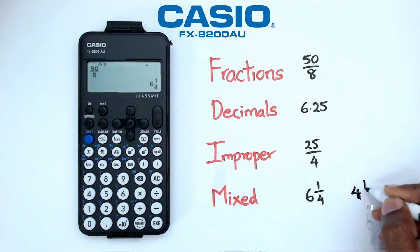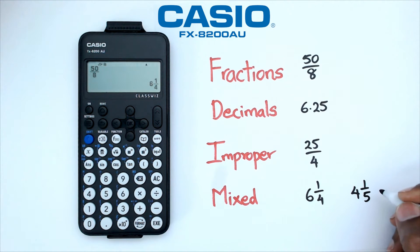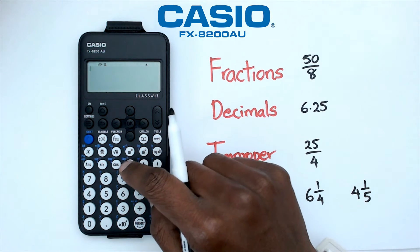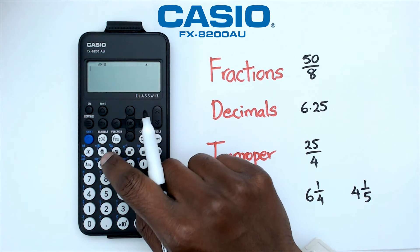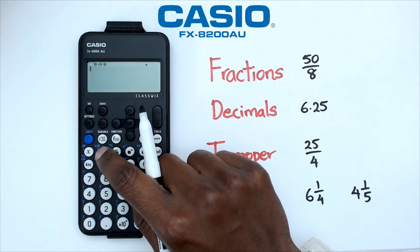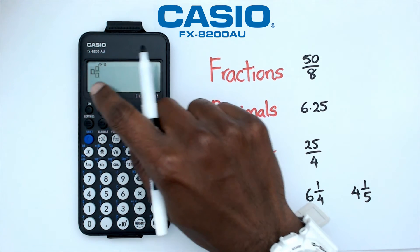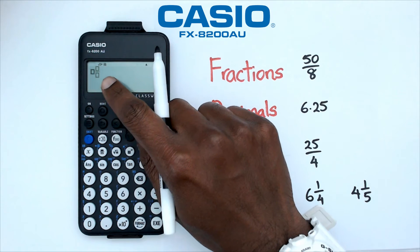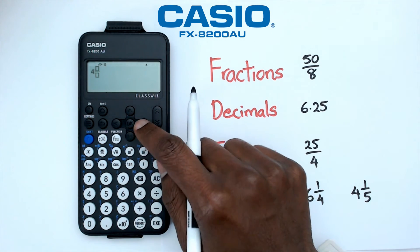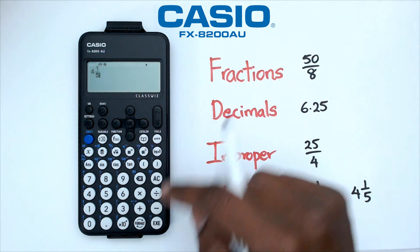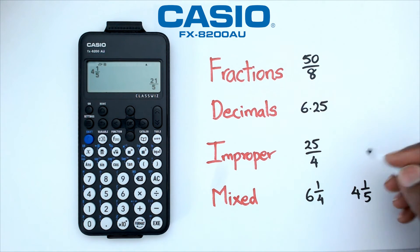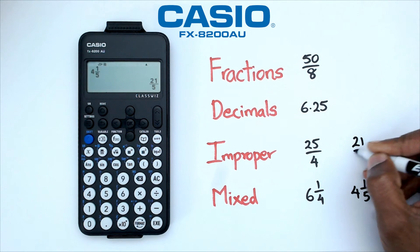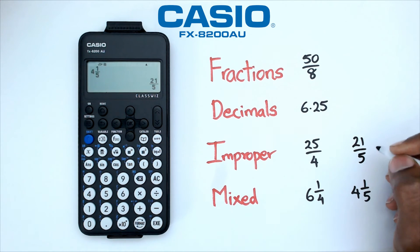What if we have a mixed fraction — for example, 4 and one fifth — and we want to convert that to an improper fraction? To do that, use Shift + the fraction button. That gives you three boxes which look like a mixed number, and you can enter your values right there. We put in 4 and one fifth, press enter, and we get 21 over 5 as the improper fraction.